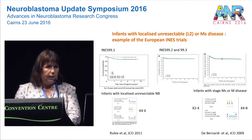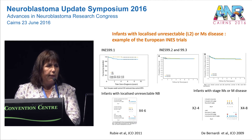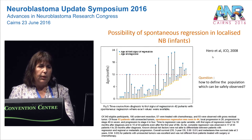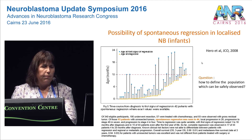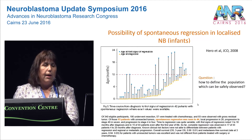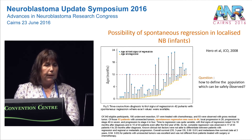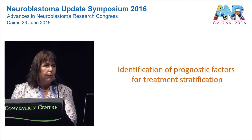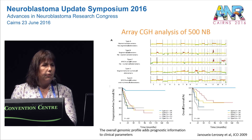Infants with localized unresectable disease or MS disease have been studied in the European INES trials, showing excellent overall and event-free survival. An interesting study by Hero and colleagues demonstrated that some patients have regression of their localized neuroblastoma without any treatment — spontaneous regression was seen in 44 out of 93 patients. The question is how to define the population that can be safely observed. Here, prognostic factors can be added, and particularly the genomic profile of the tumor can contribute to risk stratification.